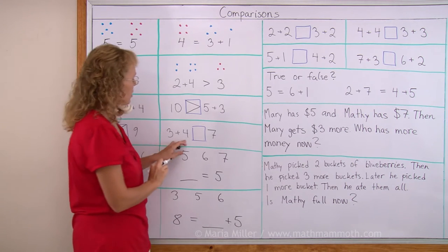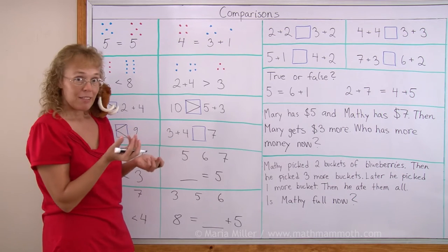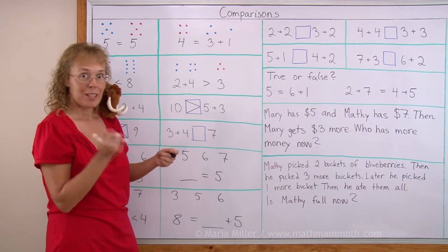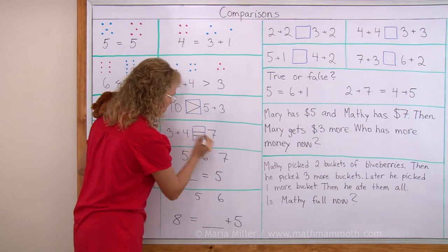And then here, 3 plus 4. That's 7. And 7. Now we use the equals. There.